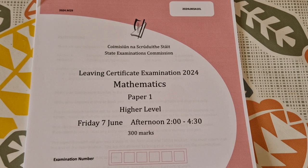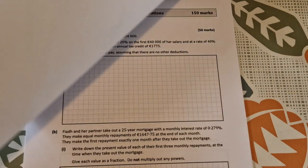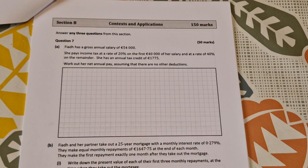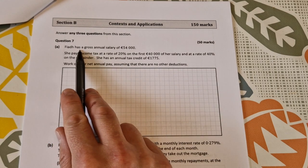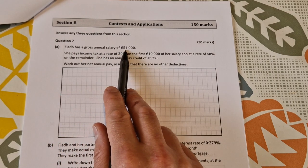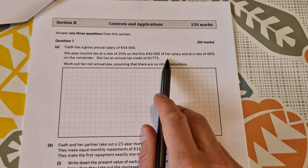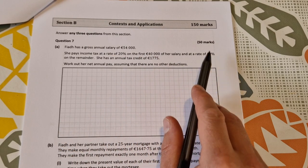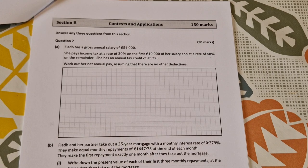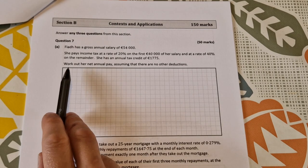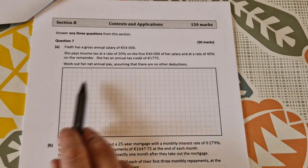This is the solution video to Leaving Certificate Higher Level Maths 2024, paper 1 question 7. Question 7 is a nice financial maths question. Fia has a gross annual salary of 54,000 euro. She pays income tax at a rate of 20% on the first 40,000 of her salary and 40% on the remainder. She has an annual tax credit of 1,775.